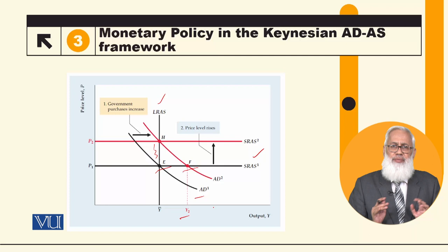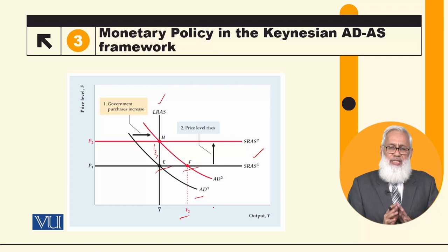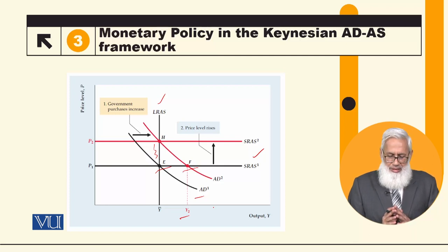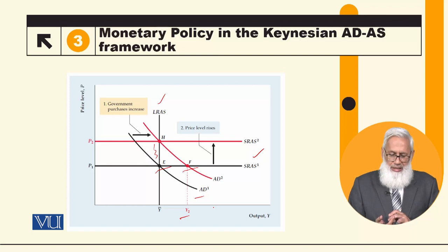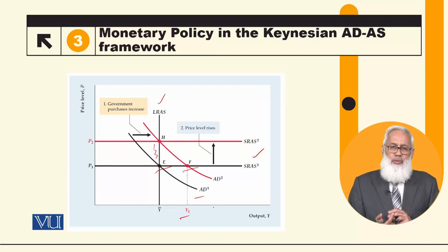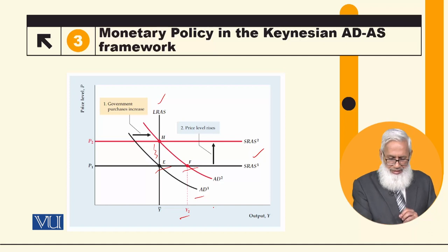In the ISLM framework, in the short run, output will increase. But when long-run prices adjust, then prices will rise, and the short-run aggregate supply curve will shift upward.